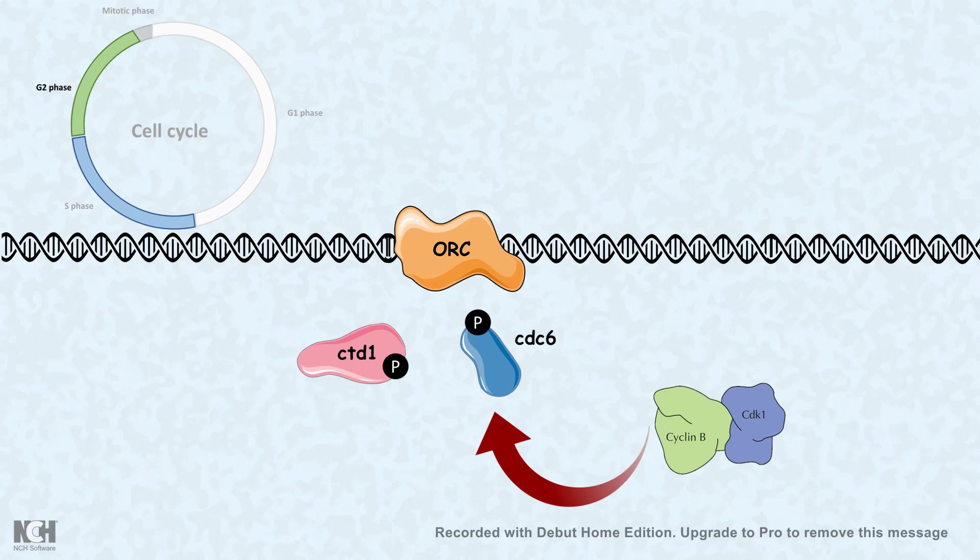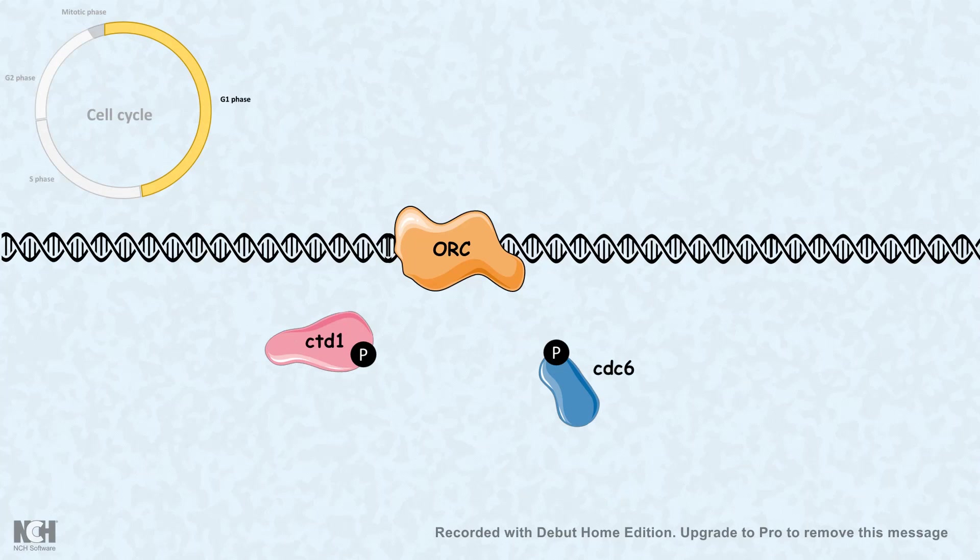Now the question is, till when will cyclin B, CDK1 maintain this phosphorylation level? Till the cyclin B and CDK1 complex is there. It turns out at the beginning of the G1 phase, the cyclin B and CDK1 complex is inactivated because the cyclin B is degraded. So nobody is there to maintain this phosphorylation level.